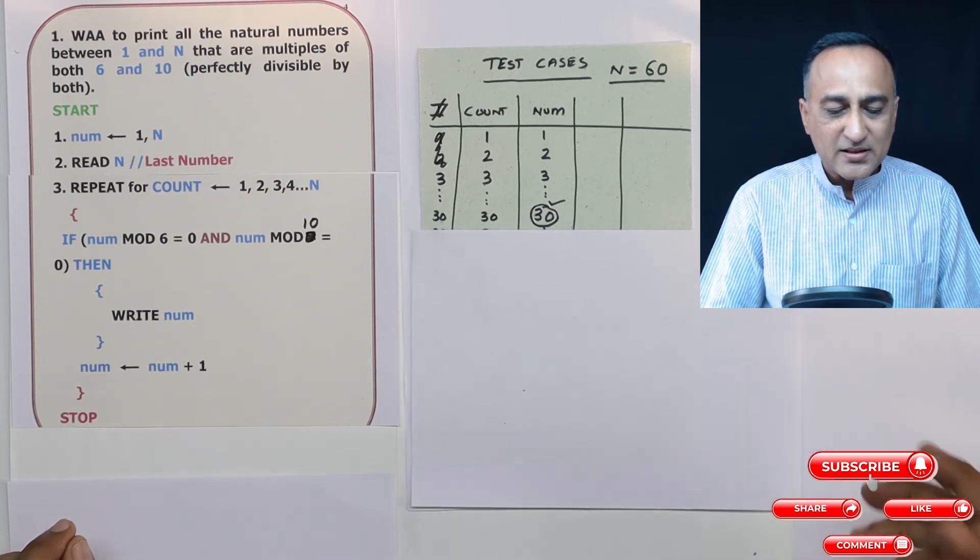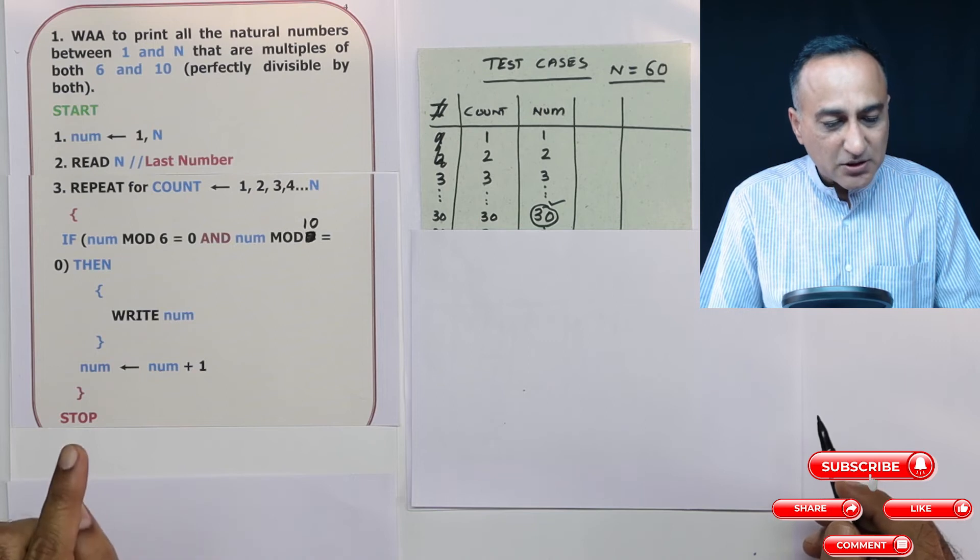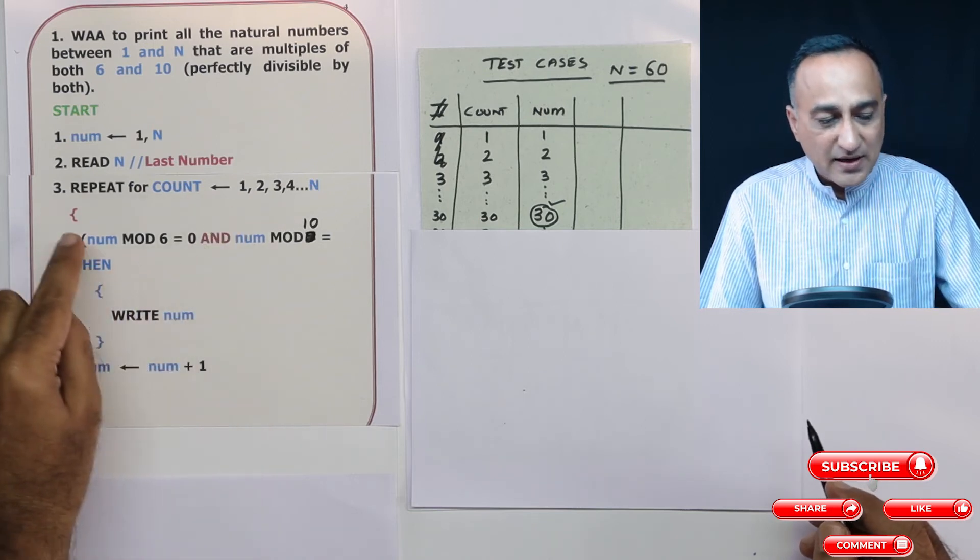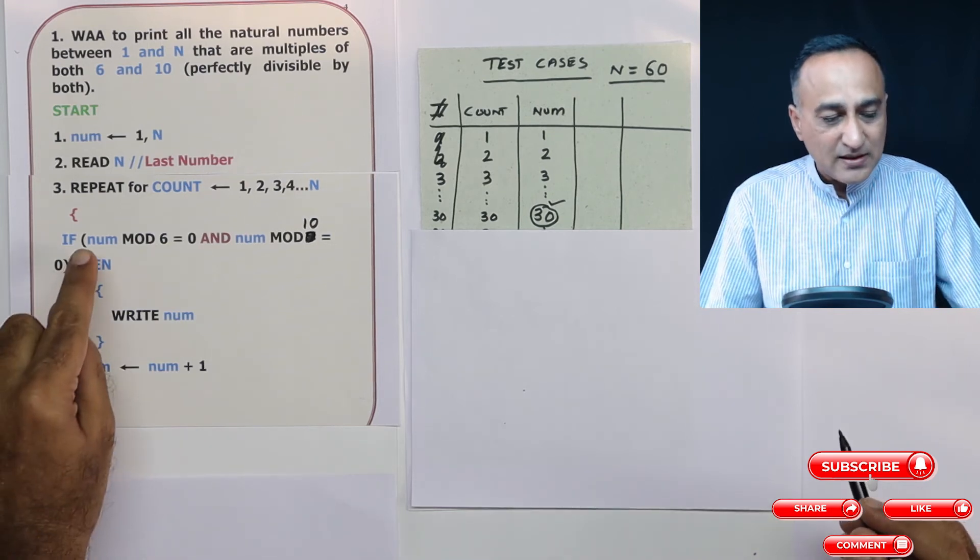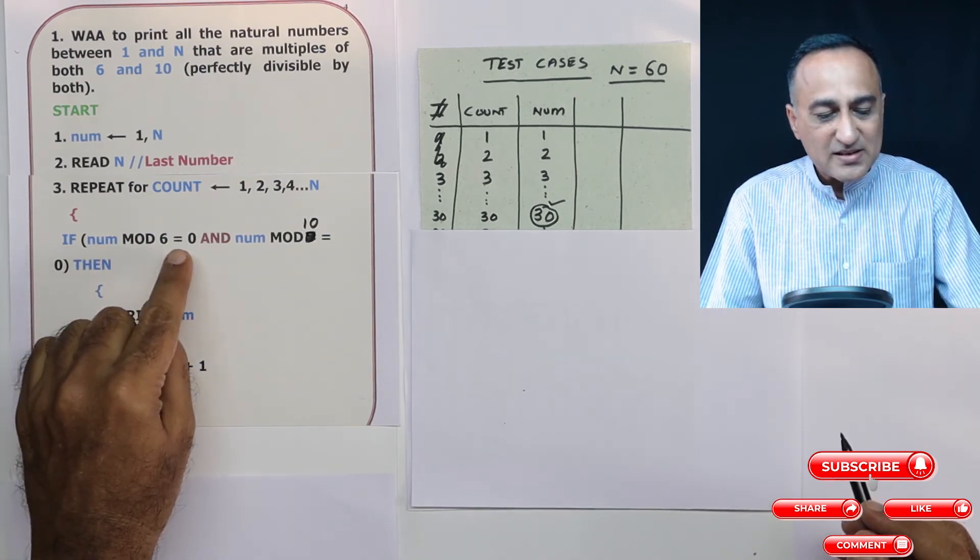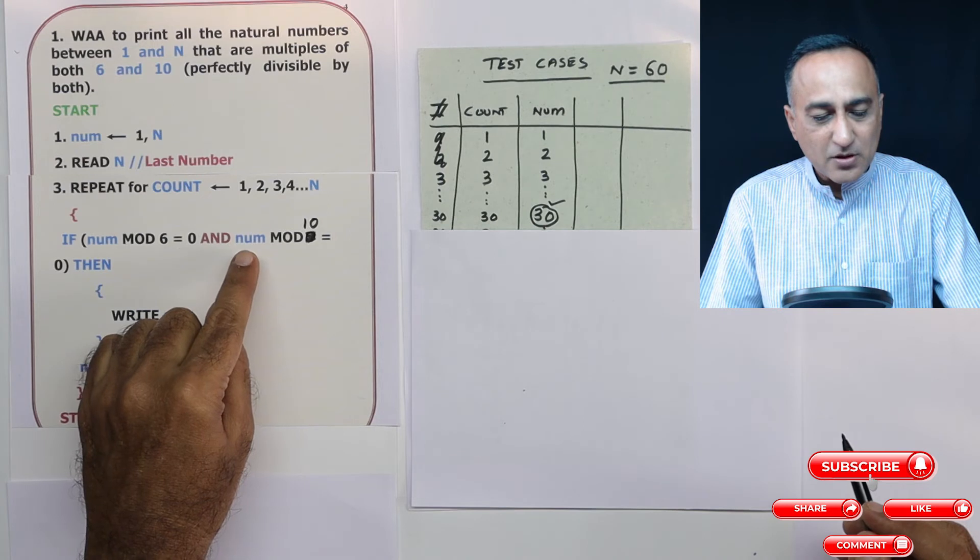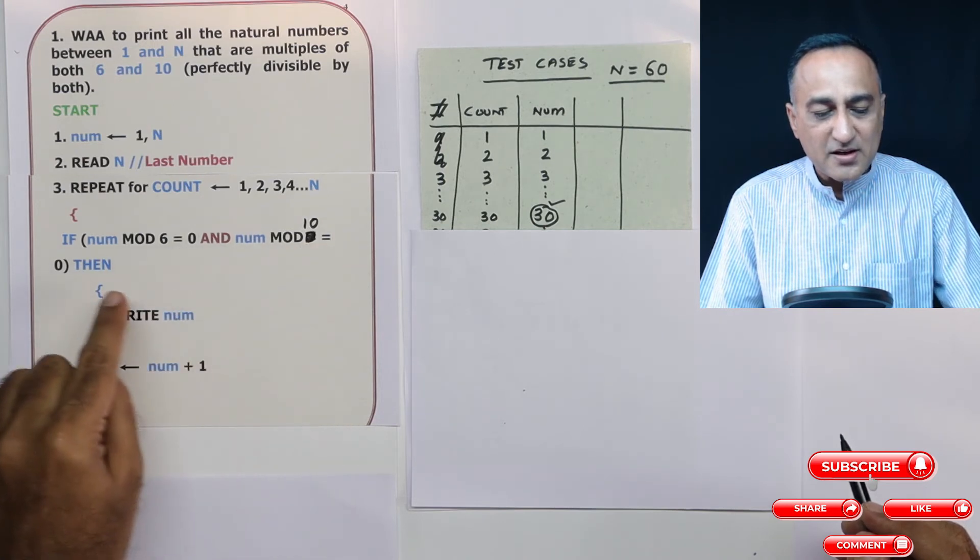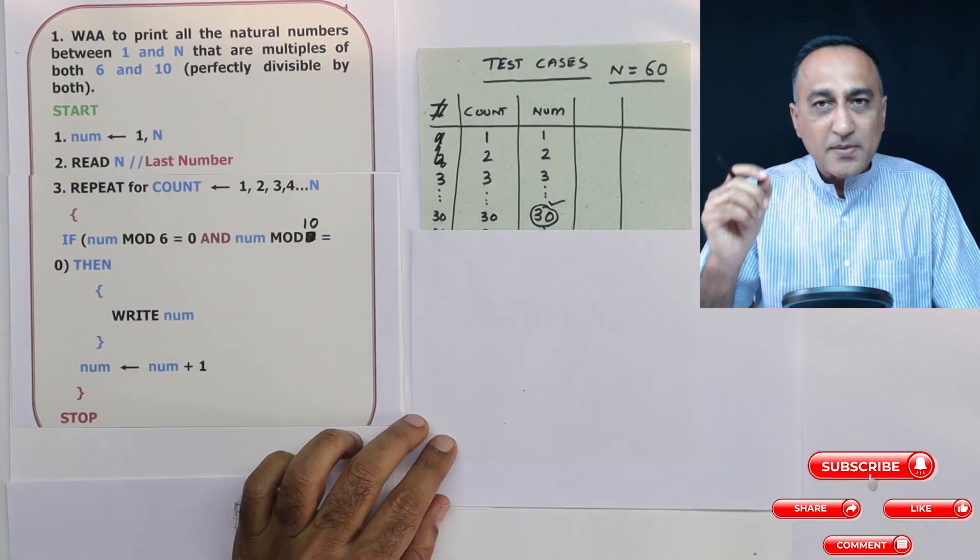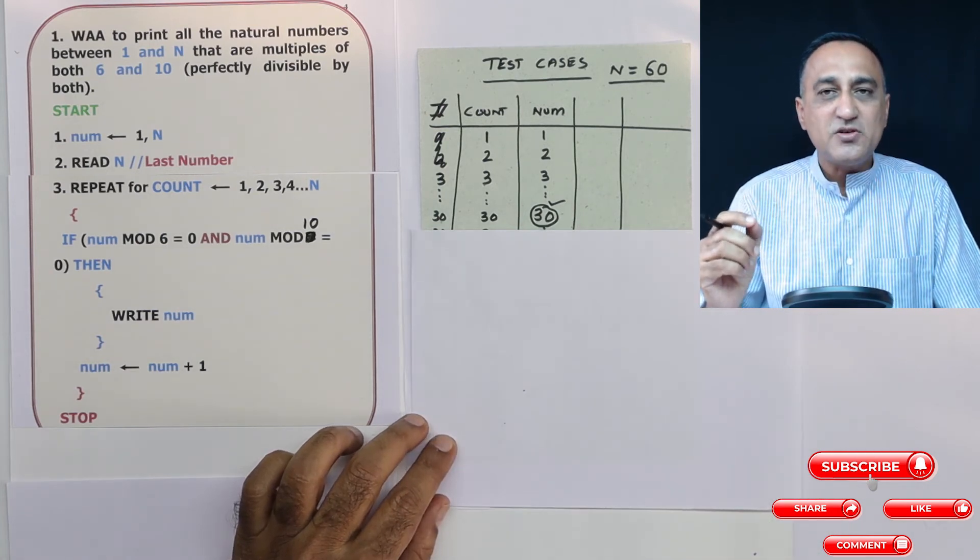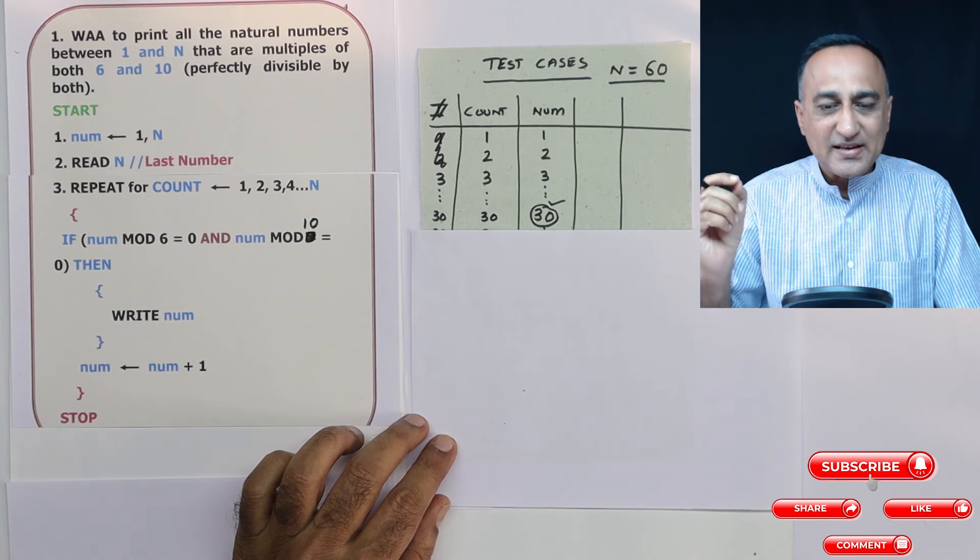Now we'll come to a number like 30. When I come to 30, count is executing this particular block for the 30th time. 30 mod 6, remainder is zero. 30 mod 10, remainder is also zero. So I am going to print 30 on the screen. So 30 is my first number which is divisible by both 6 and 10.